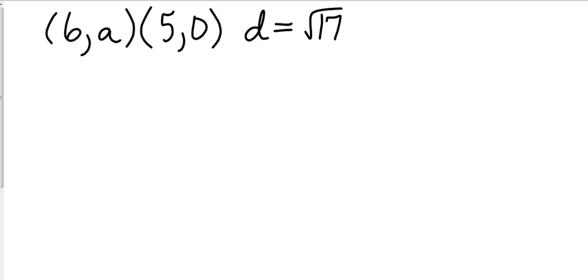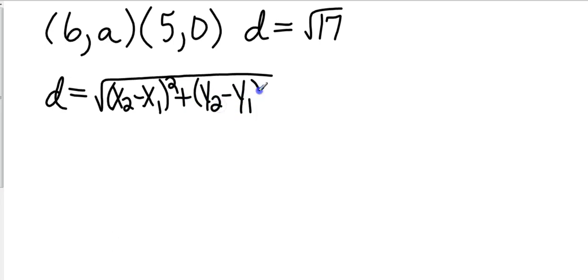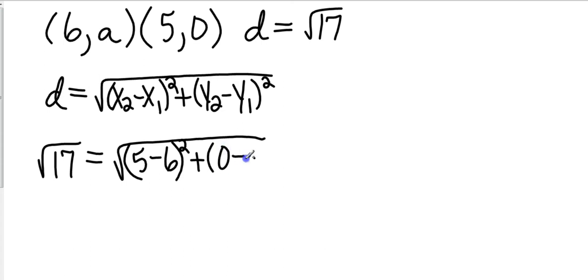So we're going to take our distance formula, write it down every time until we get used to it. And now let's sub in the things we know. We know that the distance is the square root of 17. We know that our x2 is 5, our x1 is 6, our y2 is 0. But we do not know what a is, so we just leave it as a. And let's keep going.